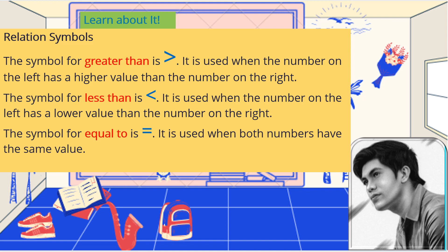The symbol for equal to is those two horizontal lines that we see. It is used when both numbers have the same value. For example, if your left hand has 5 fingers and your right hand also has 5 fingers, the symbol you're going to use is equal, because they're equal. Those are the three relation symbols we should remember.